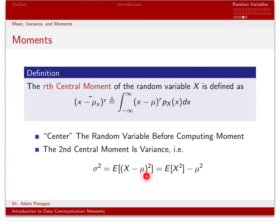The variance is simply the expected value of x minus its mean, that entire quantity squared. Most of the time in this class, we'll be dealing with zero-mean random variables. When mu is zero, the variance — the second central moment — is just equal to the mean square value. But in general, the relationship is that variance equals the expected value of x squared minus the mean squared. So remember: variance equals E[x²] minus mu squared.